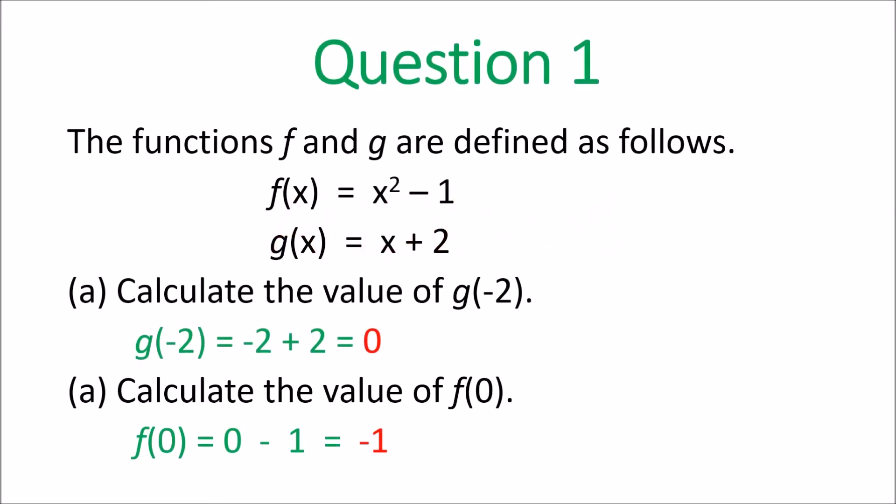Question 1: calculate the value of g of negative 2. Go to g of x and put in negative 2 for x, so it would be negative 2 plus 2, which equals 0. For part b, calculate the value of f of 0: go to f of x, put in 0 for x — 0 squared minus 1 equals negative 1. So the answer to b is negative 1. Question 1 all done.